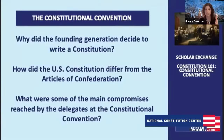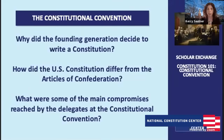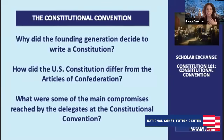We're going to answer these questions: Why did the founding generation decide to write a Constitution? How did the U.S. Constitution differ from the Articles of Confederation? And if you don't know what the Articles of Confederation are, don't worry — we'll talk about it in a minute. And what are some of the main compromises that happened at the convention, that awesome building right behind me? So Nicholas, as we dive into this, can you give us a little foundation about before the Constitutional Convention — before May 25th, 1787?